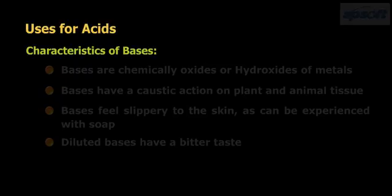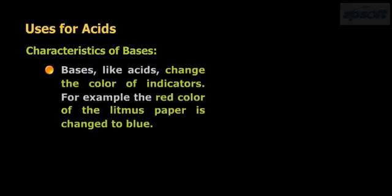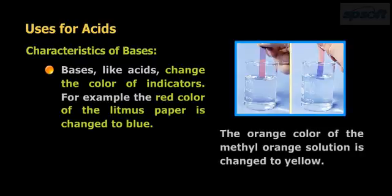Bases like acids change the color of indicators. For example, the red color of litmus paper is changed to blue. The orange color of methyl orange solution is changed to yellow.